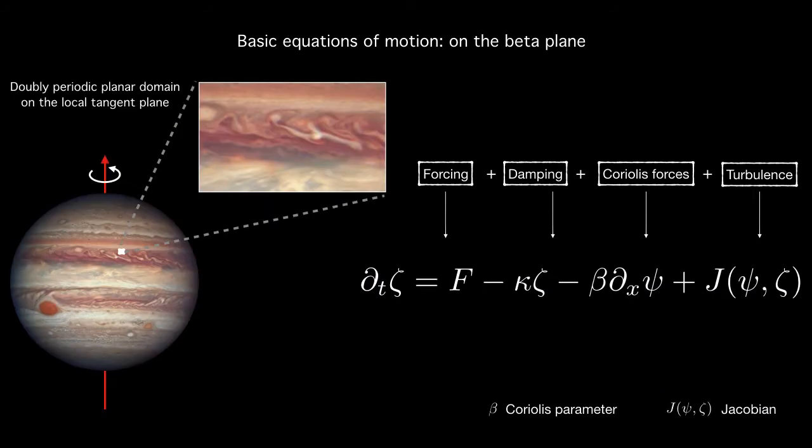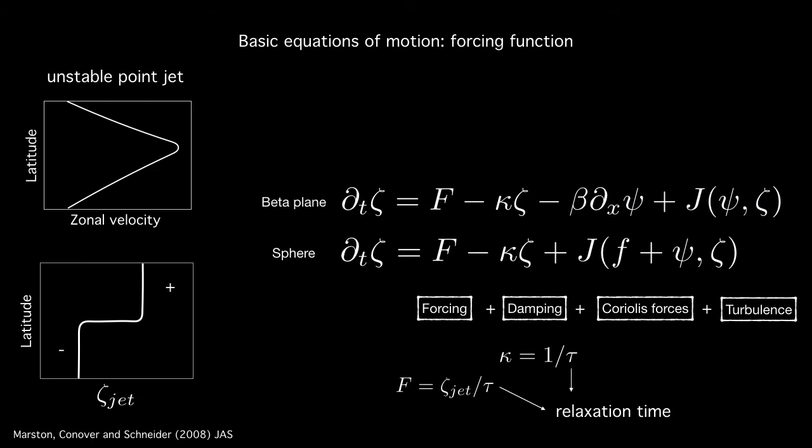However if you simplify these equations taking a local tangent plane and posing these equations on a doubly periodic planar domain then the Coriolis forces can be seen to have a linear contribution and these gives rise to interesting waves in the system. Now in our work both on the beta plane and on the spherical surface we use a very simple forcing function. This helps us in developing and going through the initial stages of our statistical theory development. So the forcing we use is a relaxation to an unstable point jet.